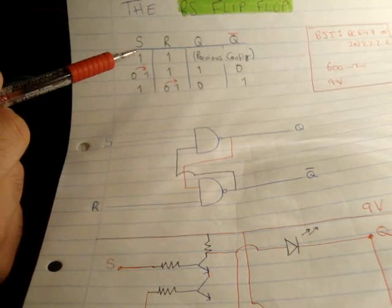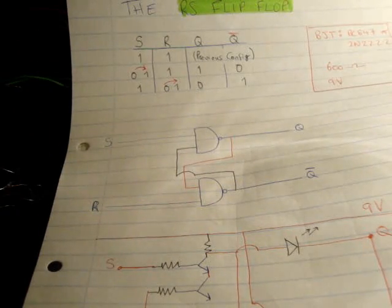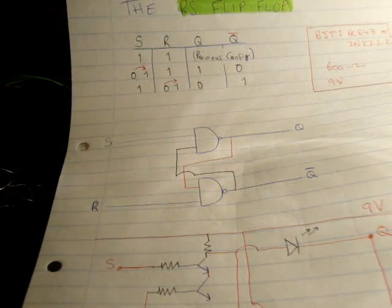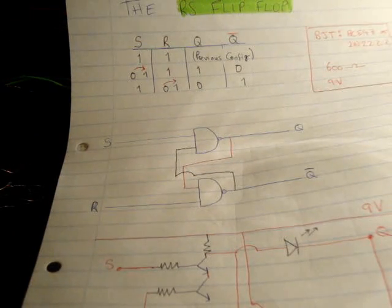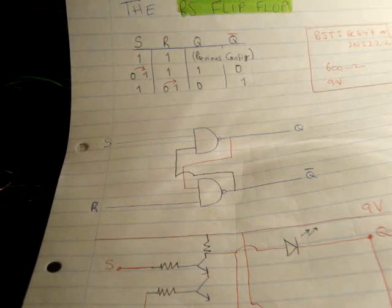The way this works is the default setting is S high and R high. And that will do nothing to your circuit or do nothing to your output. It will have it in the previous configuration. So whatever setup it's in it will stay like that.